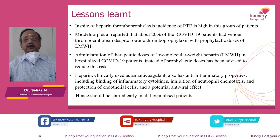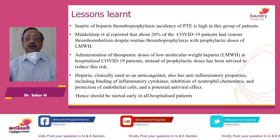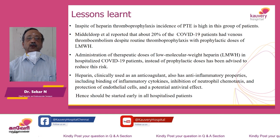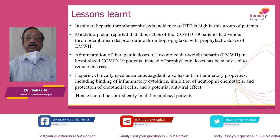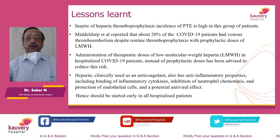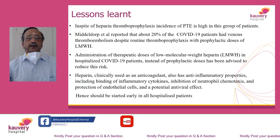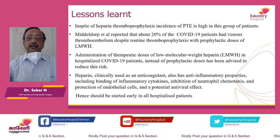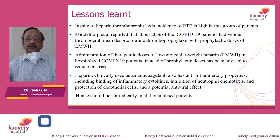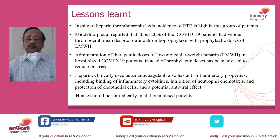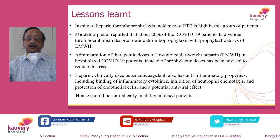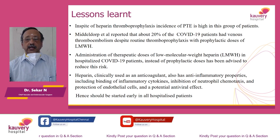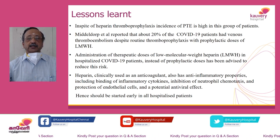What are the lessons learned in the treatment of COVID, in spite of heparin? Initially, when it was realized that there is thrombosis, heparin prophylaxis was started. Prophylactic dose is much less than a therapeutic dose. What was found was that in spite of heparin prophylaxis, the incidence of PTE continued to be high. Middletop reported that about 20% of COVID-19 patients had venous thromboembolism despite routine thromboprophylaxis with prophylactic dose of low molecular weight heparin. That is why administration of therapeutic dose of low molecular weight heparin was advised in all hospitalized COVID patients, which significantly brought down the incidence of thromboembolic events.